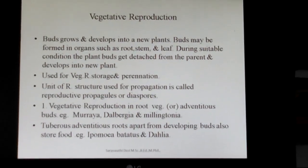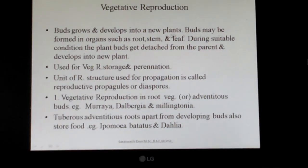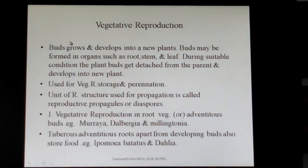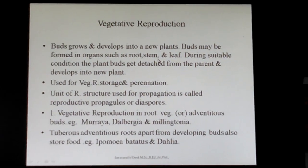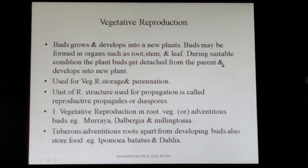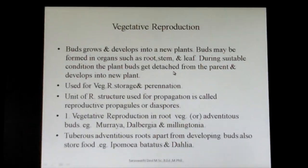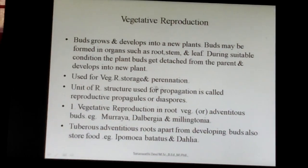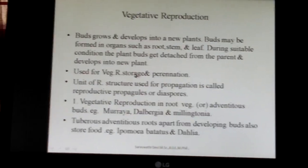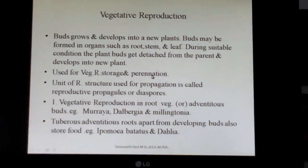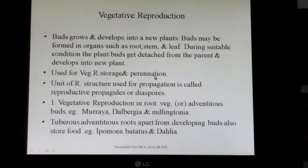Now we are going to discuss higher plant reproduction. Higher plants show asexual reproduction by producing buds. These buds can be produced in any part of the plant — roots, stem, or leaves. When a favourable condition arrives, the buds become detached and grow into a new plant. These buds are also used for vegetative propagation, storage, and perennation. Perennation means the plant can survive as an annual but regenerate under favourable conditions.